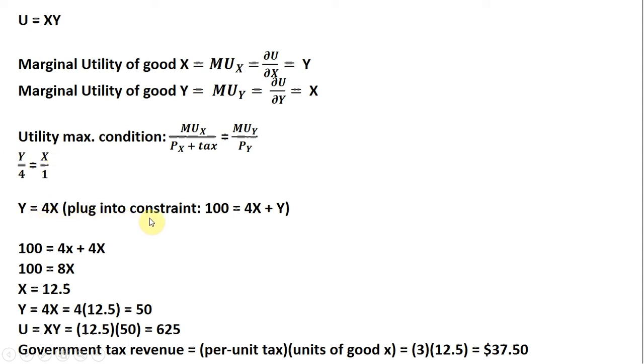We're going to take this Y equals 4X and plug it into our constraint. So doing that, where we see Y, we're going to plug in 4X. So we get 100 equals 4X plus 4X. 100 equals 8X. 100 divided by 8 is 12.5, so X equals 12.5. And the number of units of good Y the consumer will choose, we plug this 12.5 back in here for X, and the consumer will choose 50 units of good Y. The level of utility at this consumption bundle, 12.5 units of X and 50 units of Y, is 625. Notice the government tax revenue in this case is just going to be the per-unit tax, which is $3, times the number of units of good X purchased, which is 12.5. So multiplying those numbers together, the government collects revenue of $37.50 from the consumer.